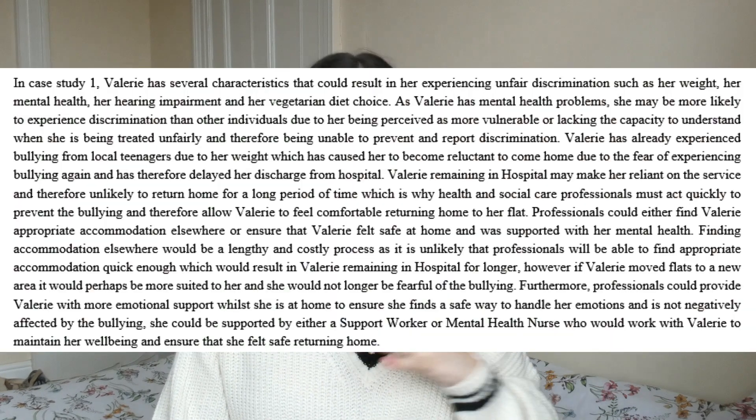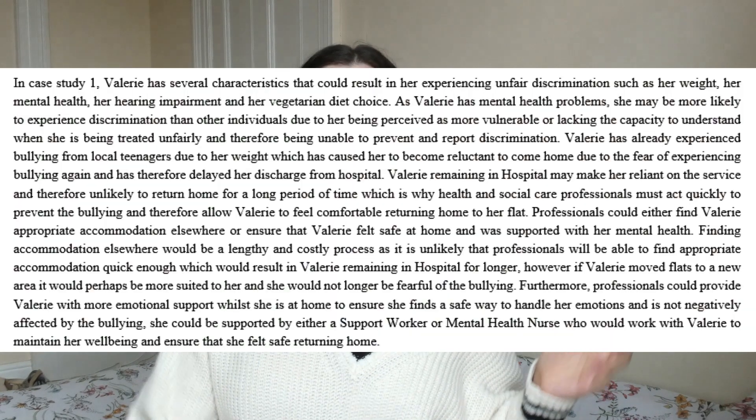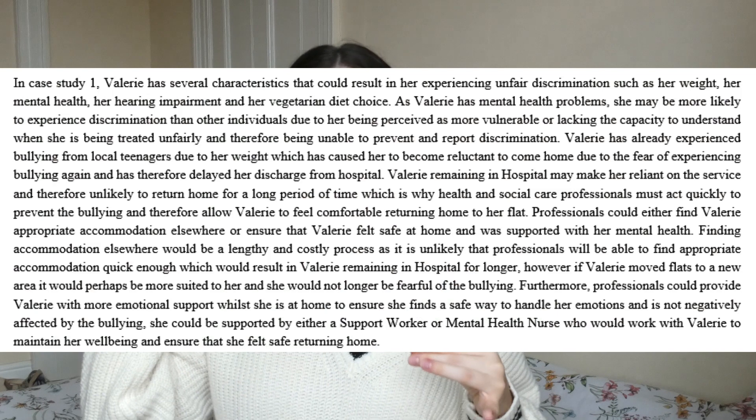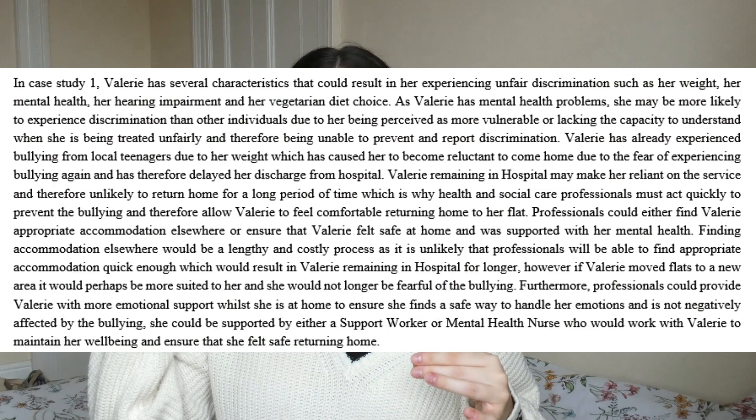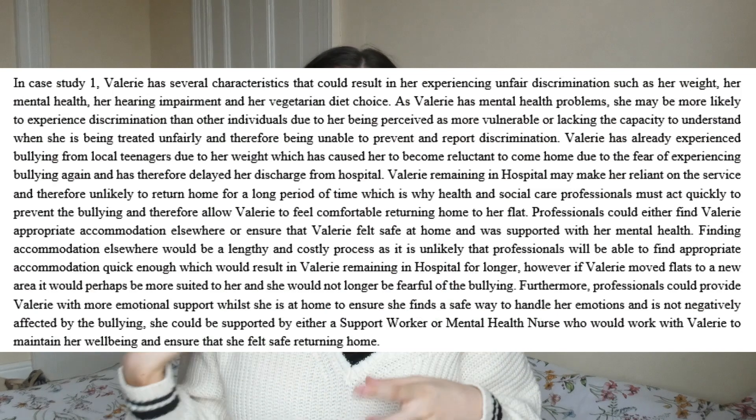AP2 is 'explain the skills and personal attributes necessary for professionals who care for individuals with different needs.' You just write a page about what the six C's are and why they're important in developing a relationship, covering people skills, communication, professional skills, and why we bother with all of that. For AM1, 'analyse the impact of preventing discrimination for individuals with different needs,' I kind of self-plagiarised — I copied and pasted my definition of what discrimination is and linked it back to my case study.